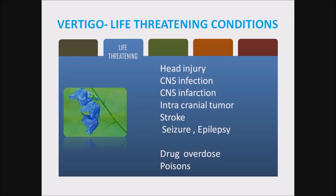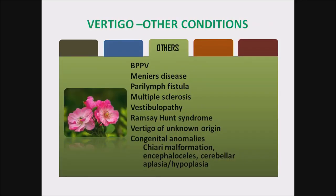Life-threatening vertigo conditions include head injury, CNS infection, CNS infarction, intracranial tumor, stroke, seizure, epilepsy, drug overdose, and poisoning. Other conditions very rarely seen in children are BPPV, Meniere's disease, perilymphatic fistula, multiple sclerosis, vestibulopathy, Ramsay Hunt syndrome, vertigo of unknown origin, and congenital anomalies — commonly Chiari malformation, encephalocele, cerebellar aplasia, and hypoplasia.